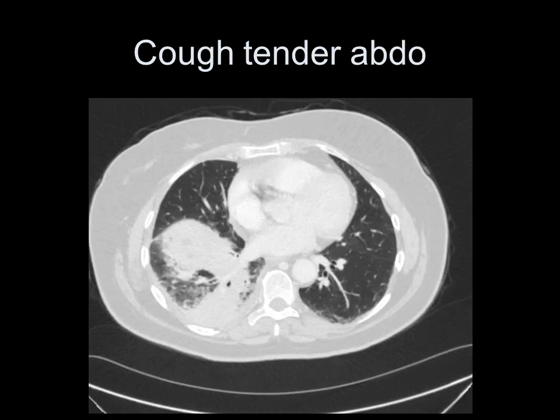Here's a patient with cough and a tender abdomen who was scanned as an abdominal patient by the surgeons — there was an incidental discovery of pneumonia, a volume-taking process in the right lower lobe. That's the end of part two; we have more cases to look at in part three.